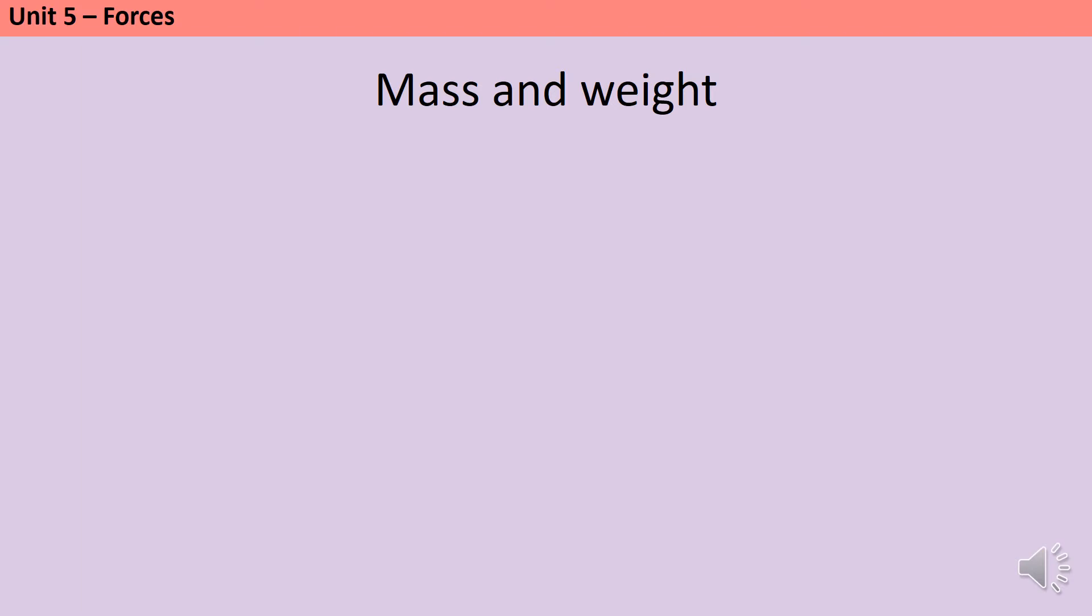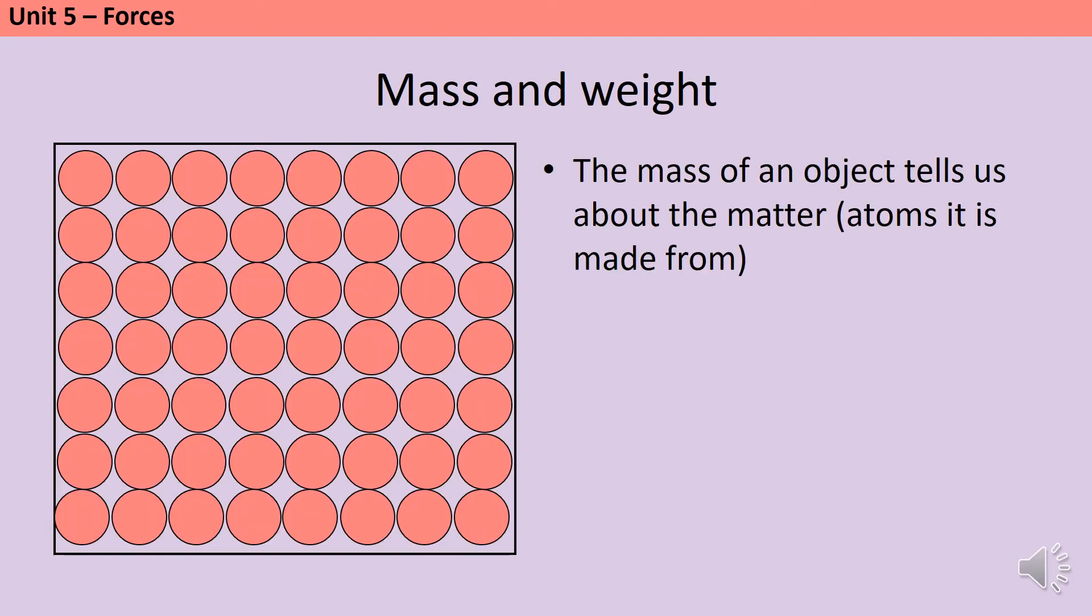The words mass and weight are often incorrectly used interchangeably. When most people say weight, what they really mean is mass. Mass tells us how much matter or how many atoms an object is made from, how much stuff is in there. This square is made from 56 atoms. Mass is measured in kilograms, and the shorthand for that is kg. When you're doing any calculation that involves mass in physics, the mass needs to be in kilograms. So if it was in grams or milligrams, you'd need to convert it first or else your final answer would not be correct.